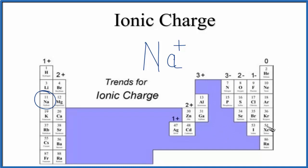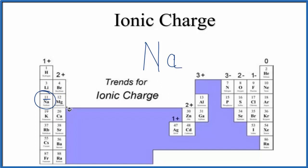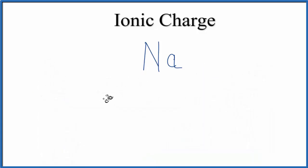We can also look at electron configuration for sodium to figure out its ionic charge — just talking about sodium, not the ion right now. Looking at the periodic table, you can see sodium has an atomic number of 11. That means it has 11 protons and 11 electrons. To write the electron configuration, we'd write 1s — that's the first energy level with an s orbital — that can have 2. That's full.